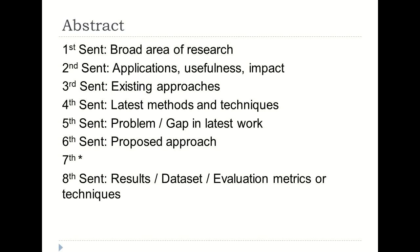In the second sentence, write about the applications, usefulness, and impact of your research work. The objective is to ensure why it is important to have improvement or modifications in this specific research area — it's like the marketing of your research area. In the third sentence, present the main types of approaches being used for this type of problem. For the fake news detection example, you may write that one type of classification approach is connectionist or neural networks, another is the probabilistic approach, and so on.